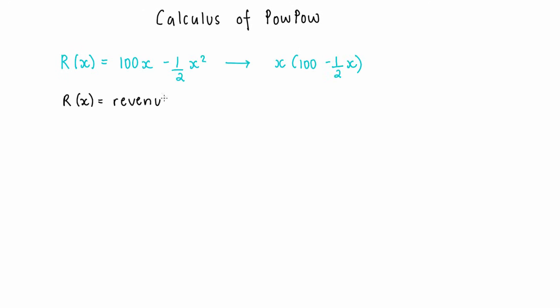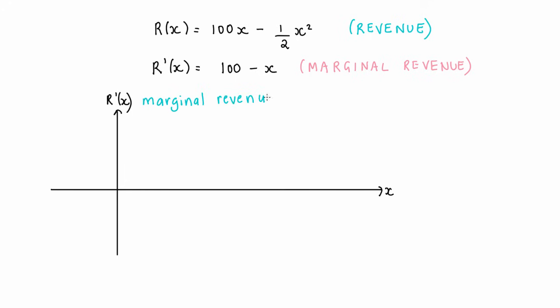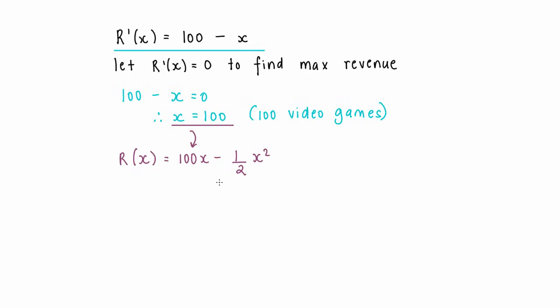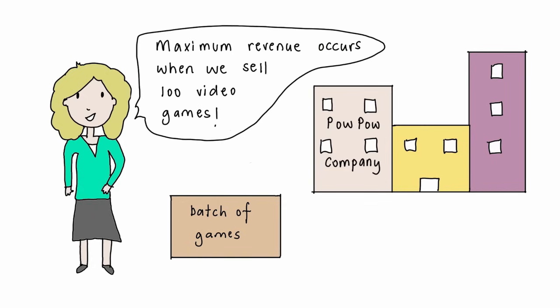Where r is the revenue and x are the number of video games sold. If we graph the revenue function, we get a concave down parabola. Marginal revenue is the first derivative of revenue. Differentiating the function, we get r'(x) = 100 - x. r'(x) is the gradient function of r(x), so the change in rate of revenue, which is called marginal revenue. If we find the maximum revenue from the first derivative algebraically, we need to let the first derivative equal zero to find the maximum x point or maximum number of video games. Letting r'(x) = 0, we get 100 - x = 0, and solving this, x = 100. Substituting x = 100 back into the revenue equation to find the actual revenue for Pow Pow, your revenue is r(100), which equals 100 × 100 - 0.5 × 100², which equals $5,000. This means that the rate of production resulting in maximum revenue occurs when the number of video games sold is 100, resulting in a total revenue of $5,000.